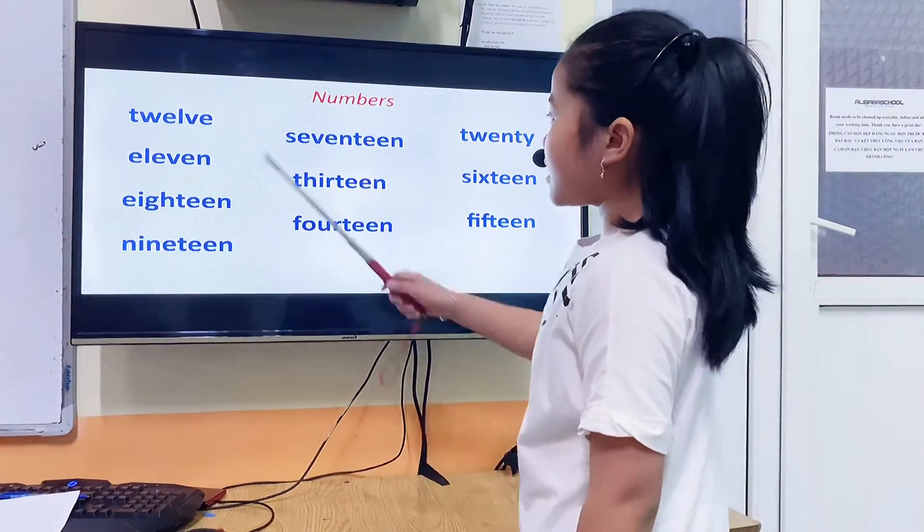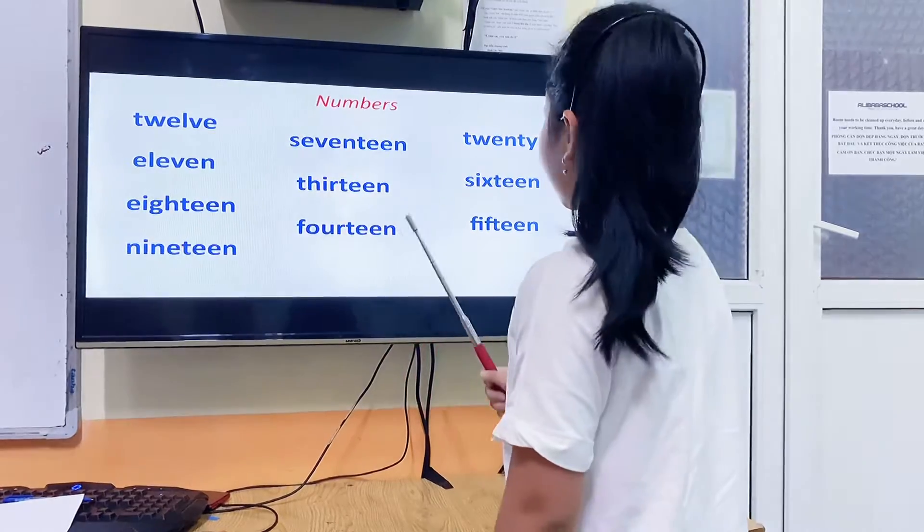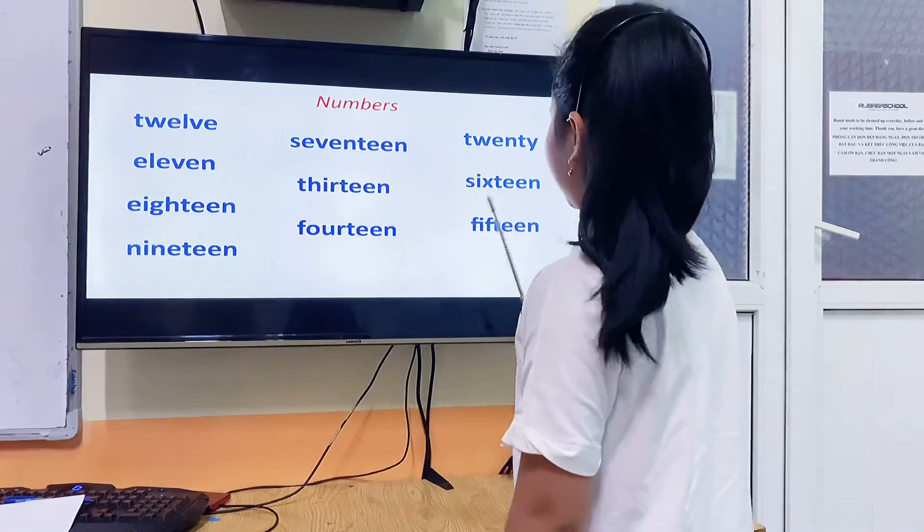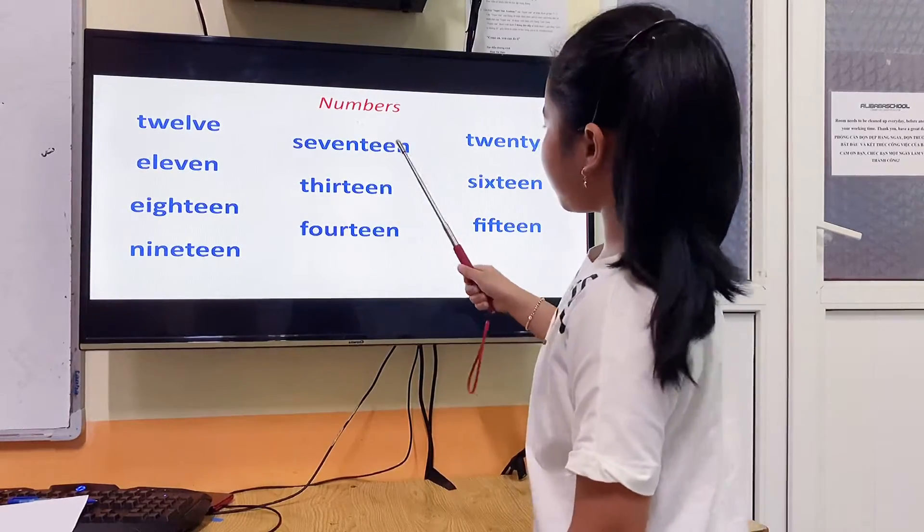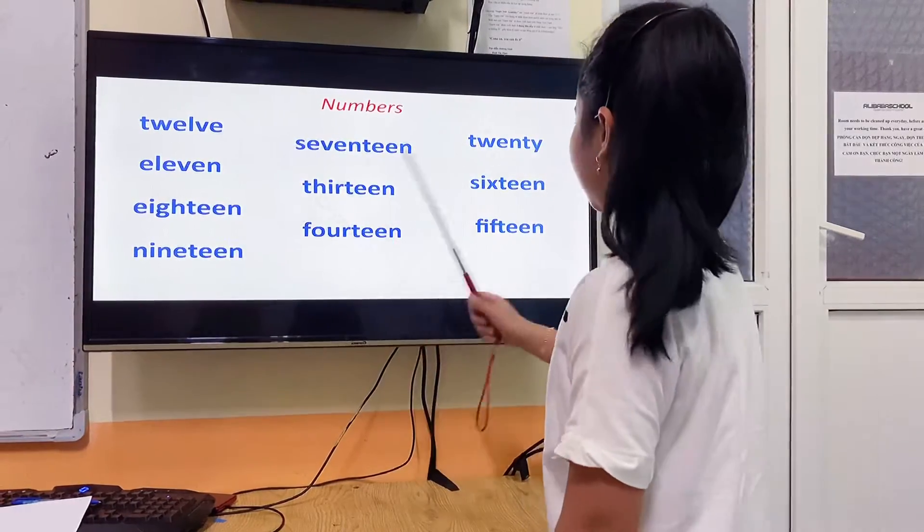Numbers? Eleven, twelve, thirteen, fourteen, fifteen, sixteen, seventeen, eighteen, nineteen, twenty.